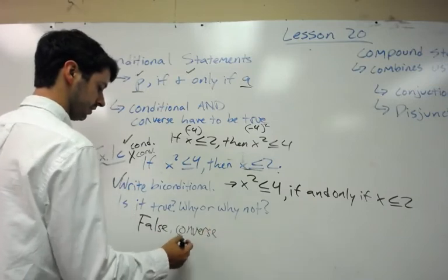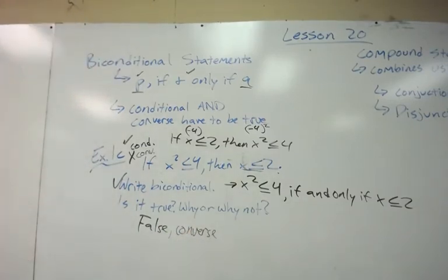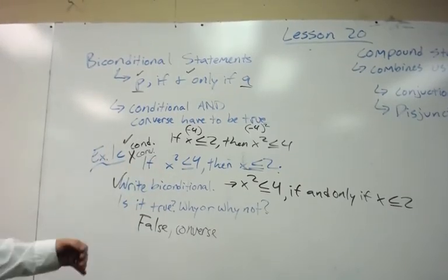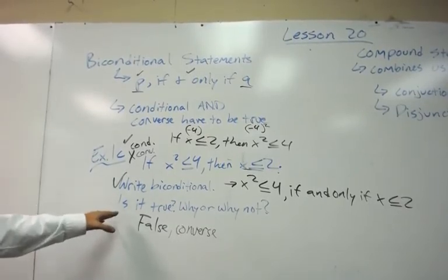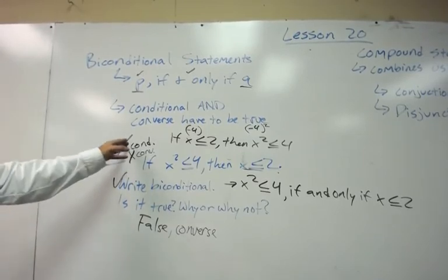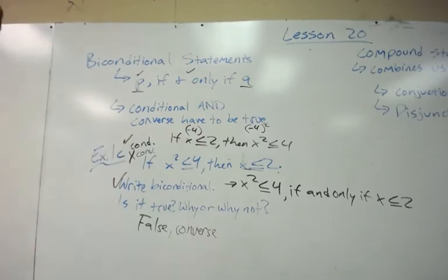Converse is proven wrong because the counterexample of negative 4. So, use your counterexample. But that would be how you would do one of those problems. You would write by conditional and determine whether it's true. And you determine whether it's true by knowing that the conditional and converse both must be true.